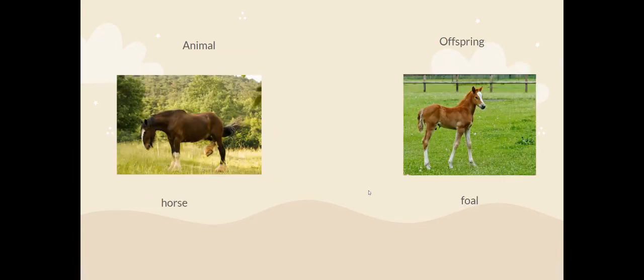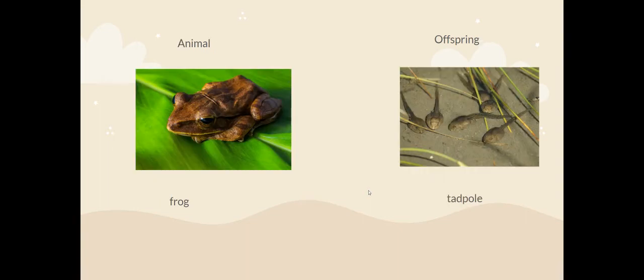A horse's offspring is called a foal. They look very similar. A frog's offspring is called a tadpole. Wow, they look really different. What are some differences you can notice? Is there anything the same? They both have eyes and their skin is a similar colour.